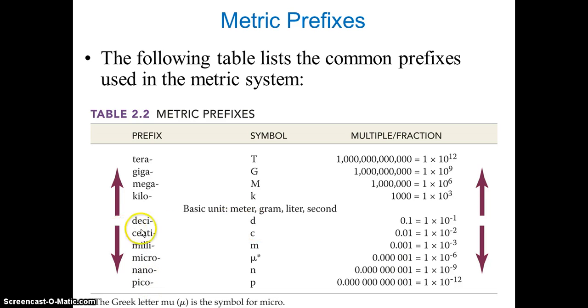When you see its symbol, deci is small d and it's 10 raised to minus 1. Centi is c, 10 raised to minus 2. Milli is m, 10 raised to minus 3, and so and so forth. You can see it's getting smaller.